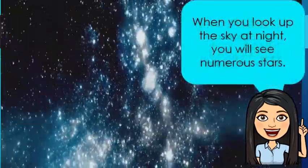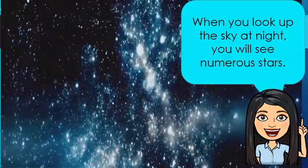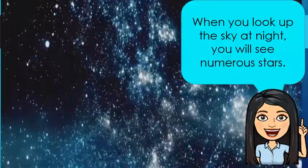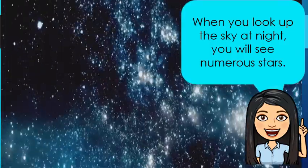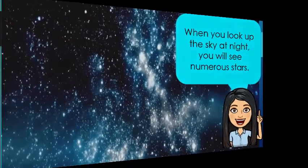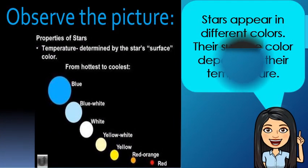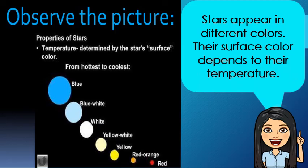When you look up in the sky at night, you will see numerous stars. They are too many. It will be difficult to count them all. Stars appear in different colors. Their surface color depends on their temperature. Blue stars are the hottest, while red ones are the coolest. Some stars are too dim to be seen with the eyes alone.